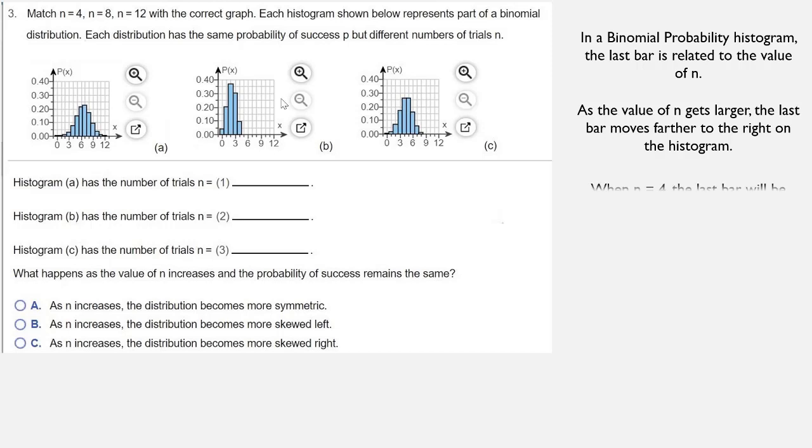When n equals 4, the last bar will be where x equals 4 on the histogram. If we look at the graphs we have, the histogram that has its last bar where x equals 4 is histogram B. So histogram B has 4 trials.